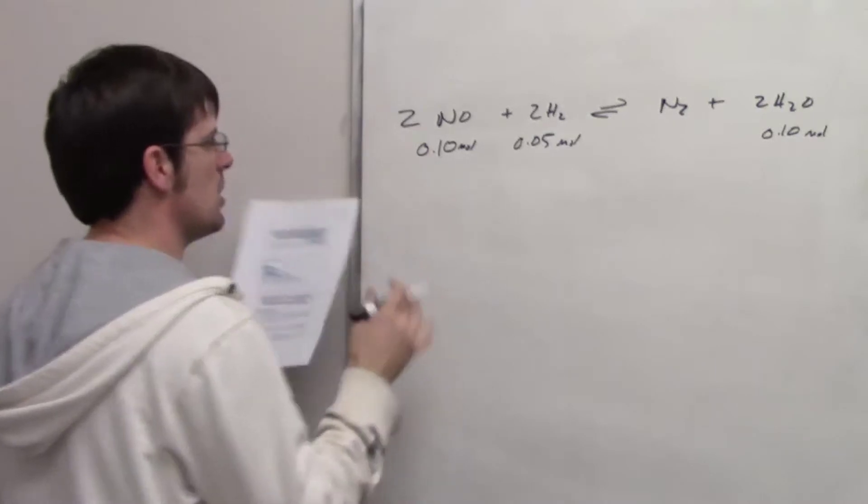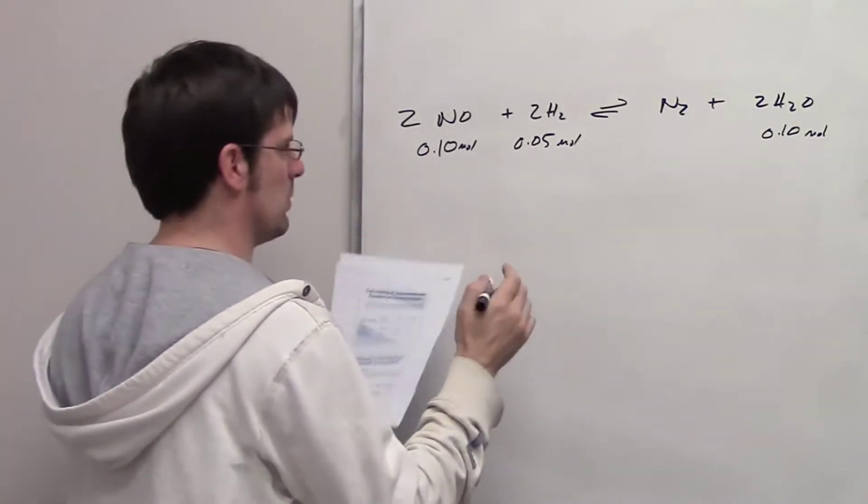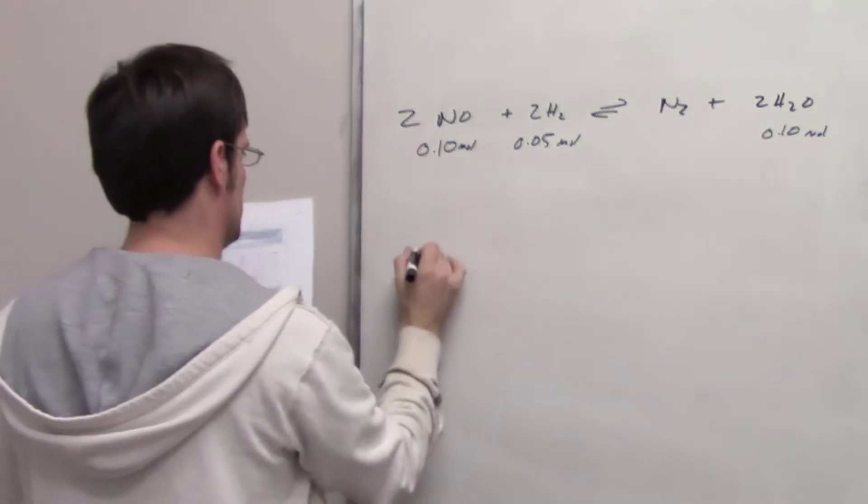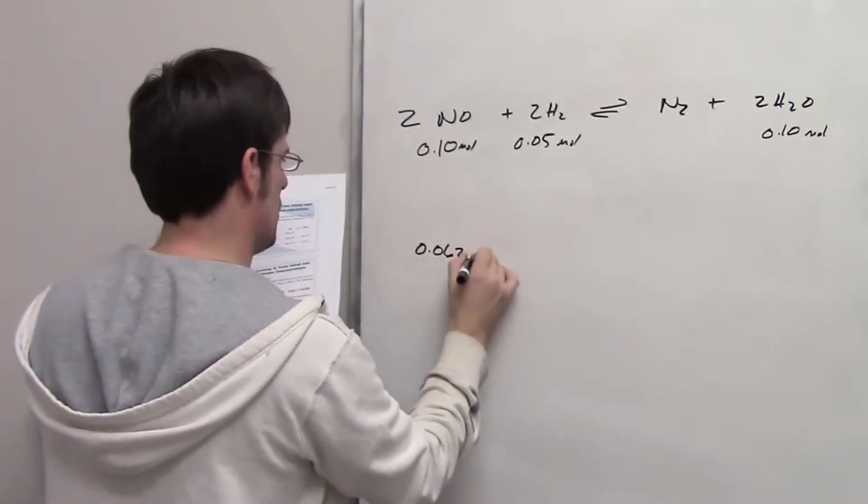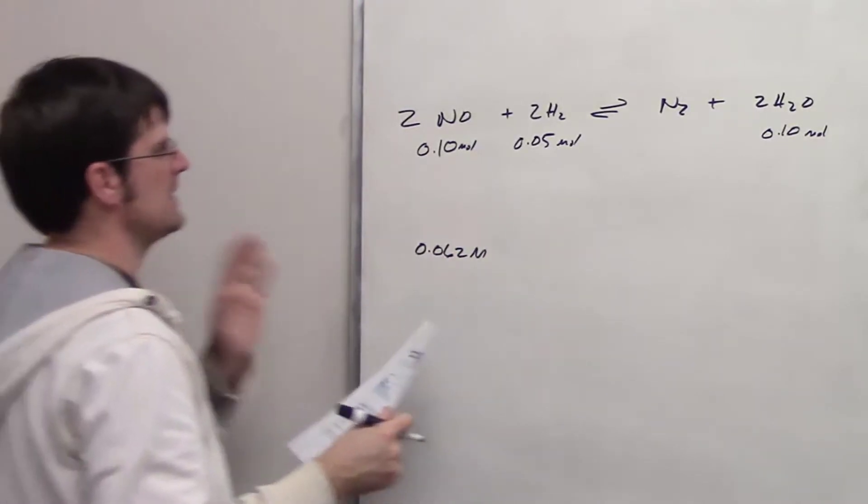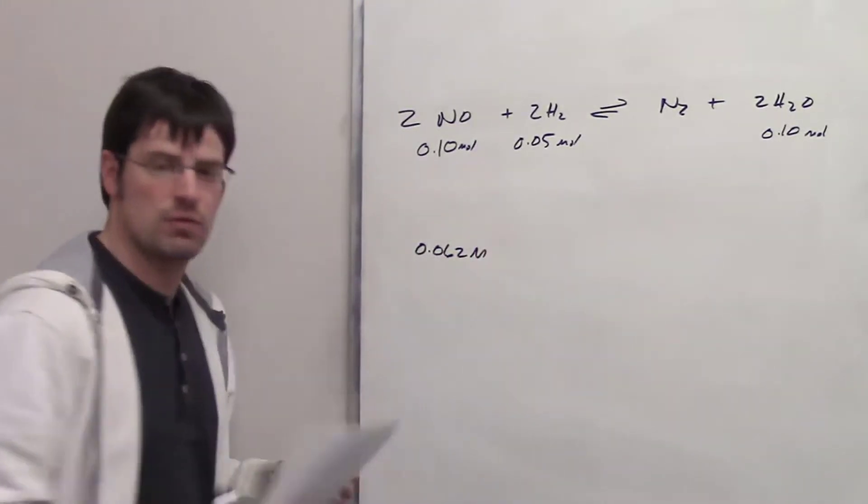It then goes to equilibrium. It informs us that at equilibrium the number of moles of NO is equal to 0.062 molar. And then it asks us to calculate the equilibrium constants for the remaining substances.